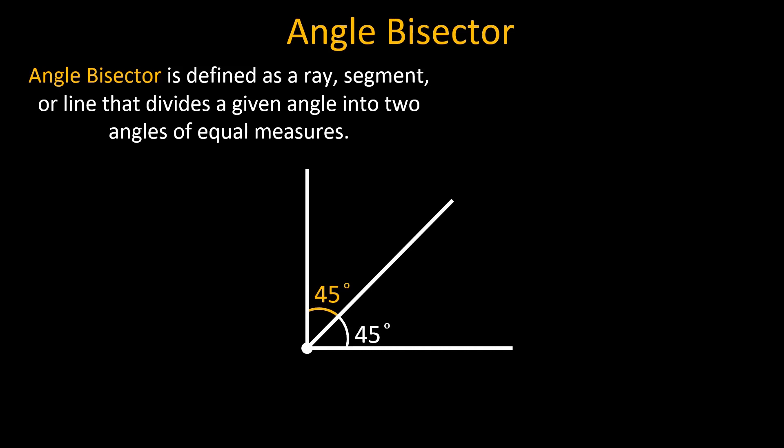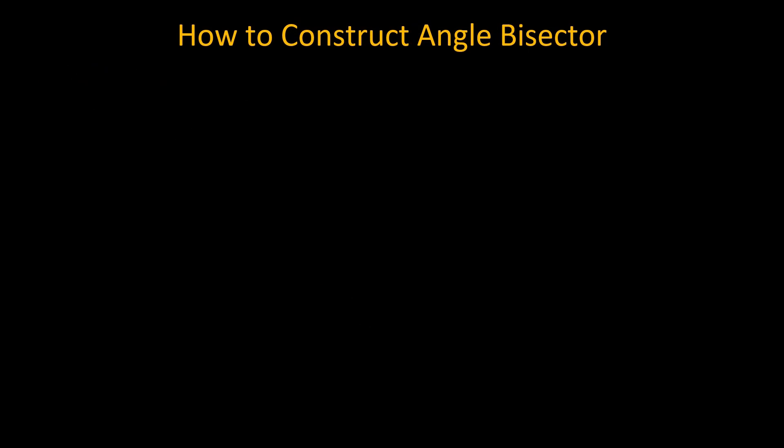Now we will discuss how to construct an angle bisector. Consider we have an angle KLM. Taking L as a center, at any appropriate radius, draw an arc that intersects rays LK and LM at N and O.